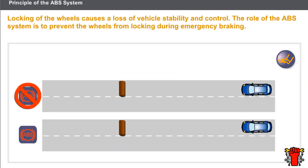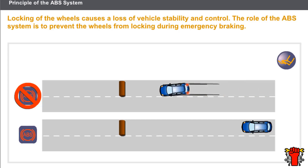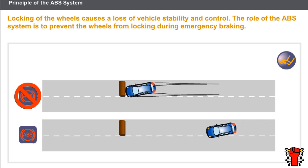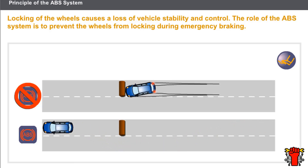During emergency braking, high pressure is applied to the brake pedal and the wheels lock. Locking of the wheels causes a loss of vehicle stability and control. If the slip value is at 100%, the wheels lock and the vehicle loses grip. The role of the ABS system is to prevent the wheels from locking during emergency braking — a slip value not exceeding 20% enables control of the vehicle to be retained.